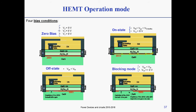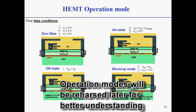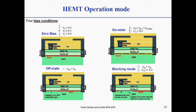For the operation mode of the device, we have four bias conditions. First, zero bias: nothing is applied, the channel is already formed — it's a normally-on device. In the on state, keeping the gate at zero, current flows as the drain bias is increased. The gate bias must be higher than the threshold voltage, which is negative, and lower than the Schottky turn-on voltage, because this is a Schottky gate — if you exceed it, current flows into the gate, which you clearly don't want.